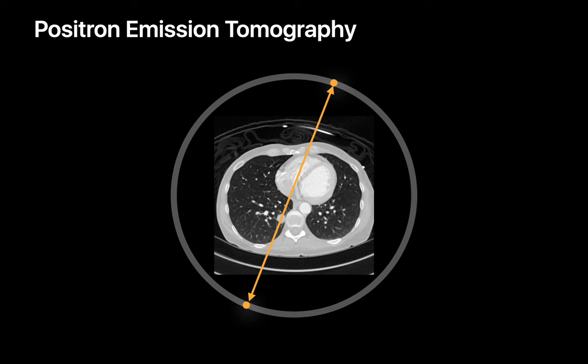Several billion of these sorts of events occur and get recorded during a typical PET scan, which allow us to reconstruct a visual map of where the annihilation events mostly occurred, using a mix of integral geometry, linear algebra, and numerical algorithms.